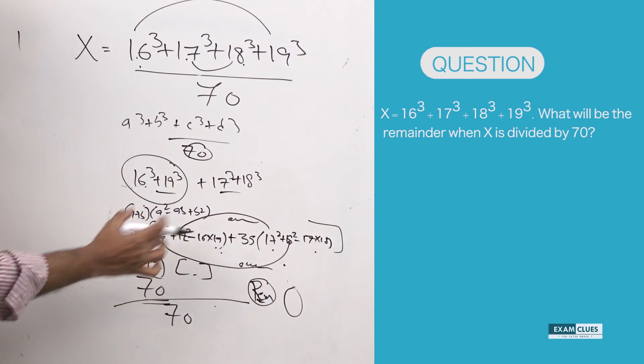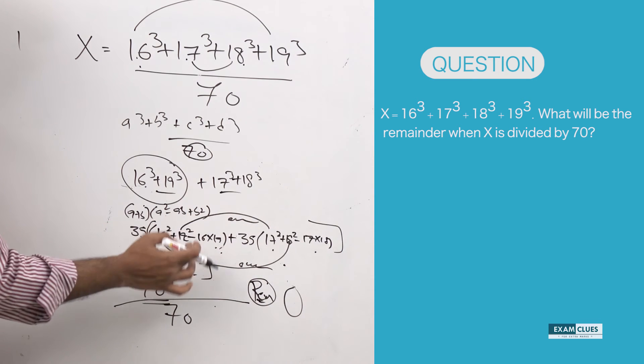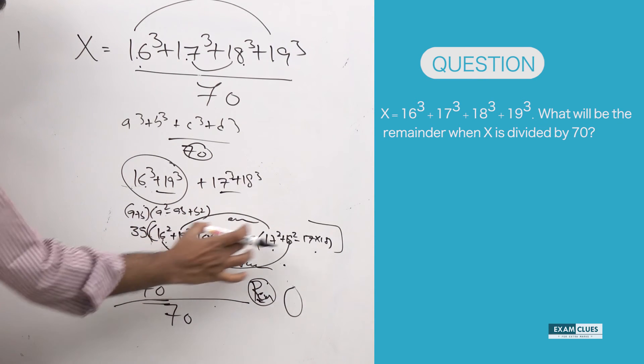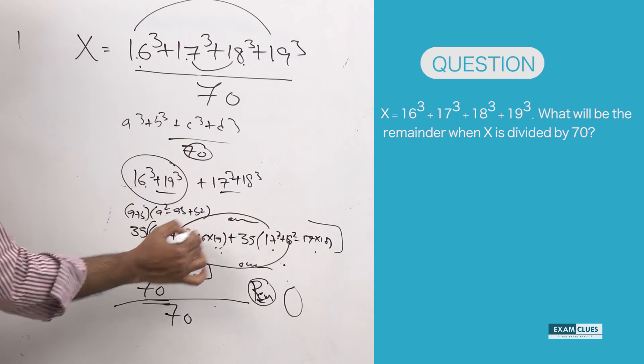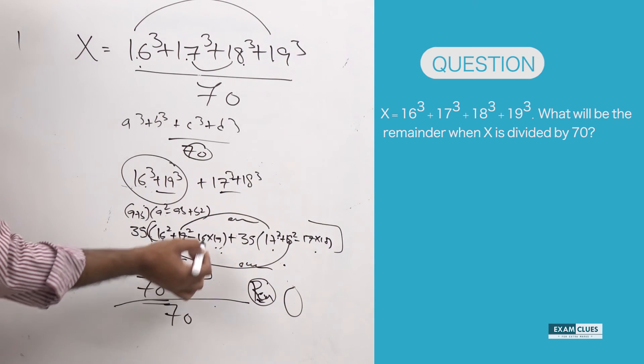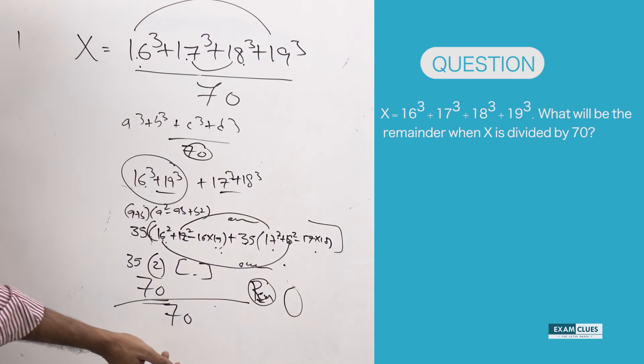But when I started adding these, I realized that these two parts will definitely yield another even number for us. Because even plus even is even, odd plus odd again even. And there are two other even numbers which are being subtracted.